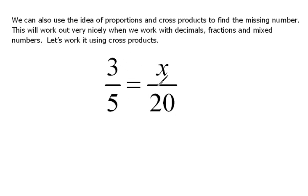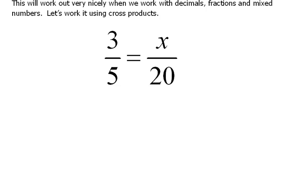Where this is going to really come in handy is whenever we're doing things with decimals, fractions, and mixed numbers—things that you can't see what you have to multiply by readily. So we're going to get the technique down with something that we know. We already know that this missing number here has to be 12. So let's see how we would get that if we worked it out using that cross product method.